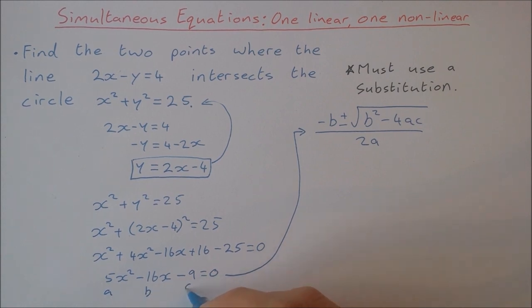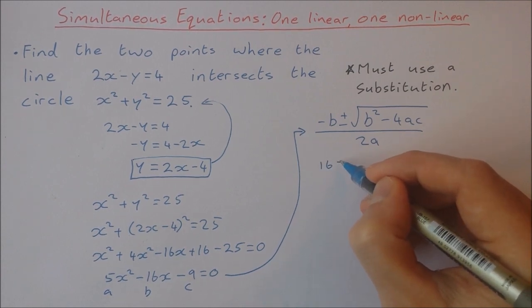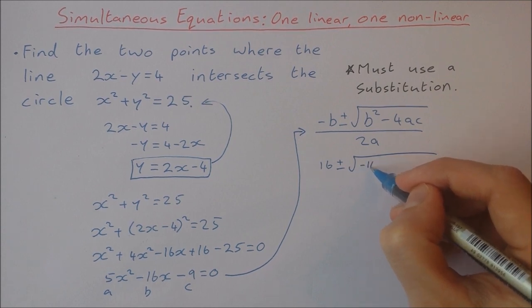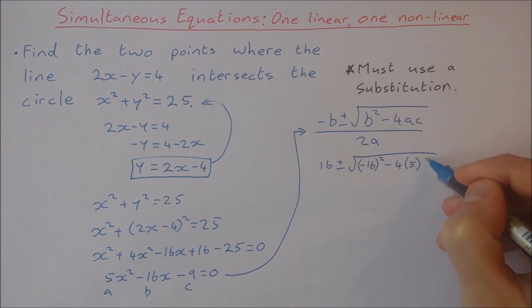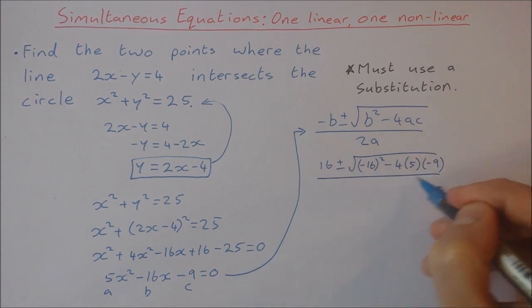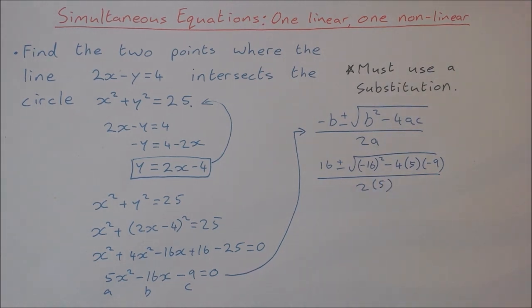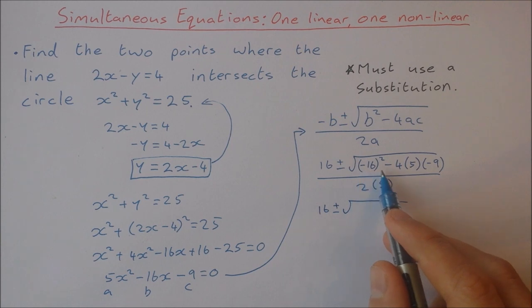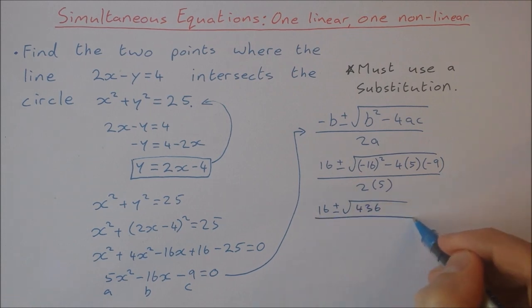So minus b, so minus minus 16 is plus 16. 16 plus and minus square root of minus 16 squared minus 4 times a which is 5 times c which is minus 9 all over 2 times 5. That gives me 16 plus and minus the square root of, when I work all this stuff out here I end up getting the square root of 436, all over 10.